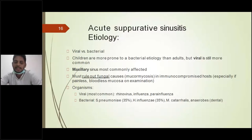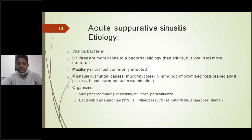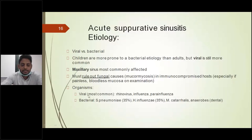Apart from viral and bacterial, fungal etiology should also be ruled out, especially in immunocompromised patients — diabetic patients and HIV patients. In these patients, fungal etiology is more common. A brief review of organisms: viral is most common — rhinovirus is the most common. For bacteria: Streptococcus pneumoniae, H. influenzae, Moraxella, and anaerobes are the most common bacterial causes.